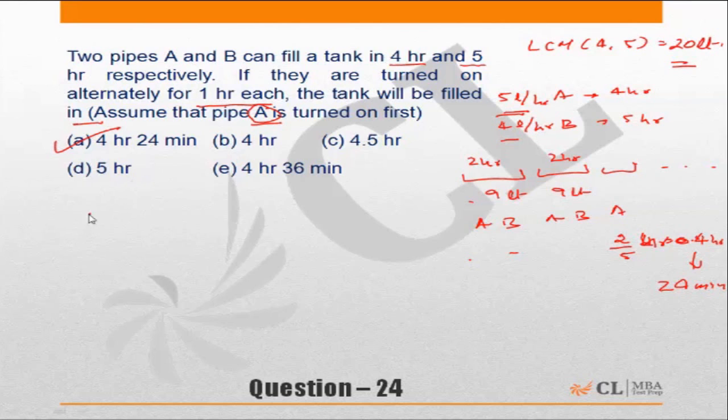A fills up the tank in 4 hours and B fills up the tank in 5 hours. That means A will fill in 25% of the tank in an hour, and B will fill 20% of the tank in an hour.